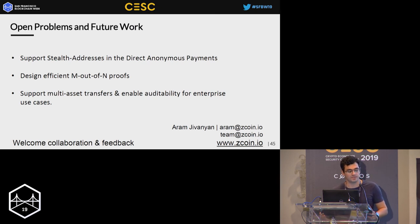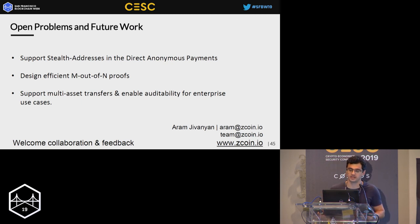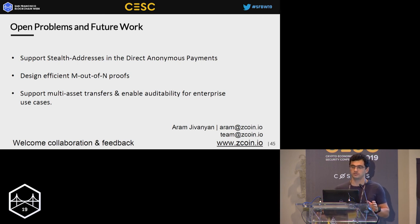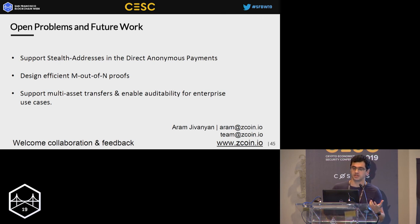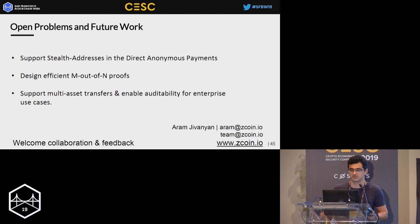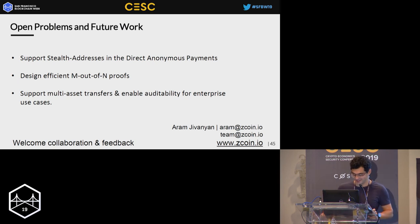We believe there are many ways Lelantus can be significantly improved. An interesting open problem is supporting stealth addresses in the direct anonymous payment system. It would also be valuable to design efficient M out of N proofs — a new cryptographic protocol to prove that M out of N commitments open to zero — resulting in significant proof size optimization for transactions having more than one input. We are also working to support multi-asset transfers and auditability of transactions for enterprise use cases. Thank you for your attention.